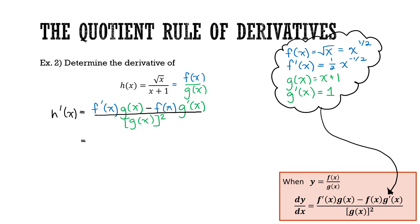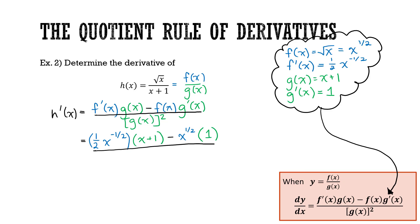Substituting: f prime is half x to the power of negative half, times g of x — the original denominator — x plus 1, minus the original numerator f of x, x to the power of half, times g prime of x — the derivative of the denominator — which is 1. All divided by g of x, the original denominator x plus 1, all squared. Now I've completed the quotient rule for the derivative, but we're going to clean this up a little bit.